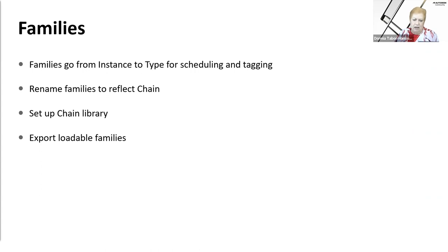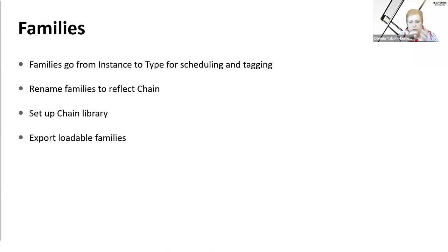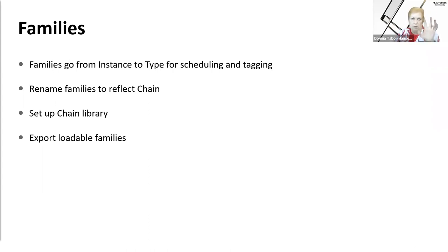We have two built-in tag parameters loaded in every one of our component families — one is instance and one is type — so we can use either one. Don't forget your schedules will have to be edited if you're changing to type parameters; your schedules will have to reflect that new type parameter. You may also have to update sorting or filters. Rename the families to reflect the chain. When they become a type and are used only for that chain, set them aside in a separate library.